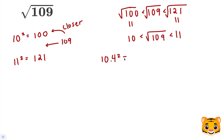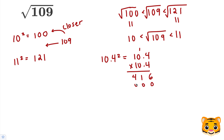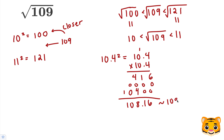Let's try 10.4 squared and see how close we can get to 109. 4 times 4 is 16, carry the 1, 0 times 4 is 0, plus 1 is 1, and then 1 times 4 is 4. Add zeros for the next row, and then 2 zeros as placeholders for our final row. 1 times 4 is 4, 1 times 0 is 0, and then 1 times 1 is 1. Adding these together, we get 108.16, which is fairly close to 109, so we'll approximate it as 109. We can then say that 10.4 squared is approximately 109.